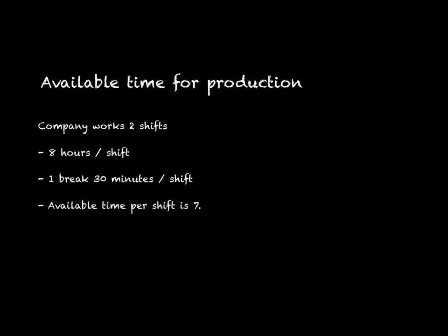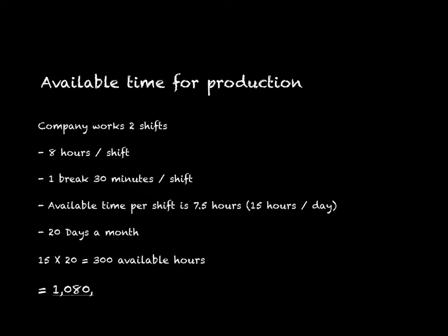How do we calculate the available time for production? Let's imagine we own a company that works two shifts. Each shift has 8 hours, and employees have a 30-minute break per shift. Available time per shift is 7.5 hours, or 15 hours a day. One month has 20 available days, so the available time for production would be 300 hours — equal to 1,080,000 seconds.